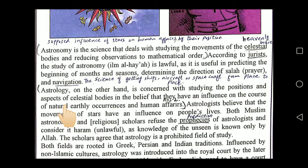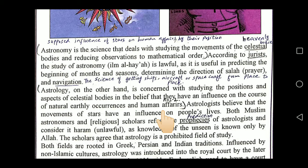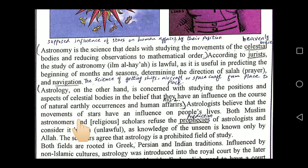Astrology, on the other hand, is concerned with studying the position and aspects of celestial bodies in the belief that they have an influence on the course of natural earthly occurrences and human affairs. We study the position and movements of stars believing their position and movement have a great effect on everything that happens on earth — for example, saying that because of the movement of the stars, rain will fall or a certain fate will befall someone.